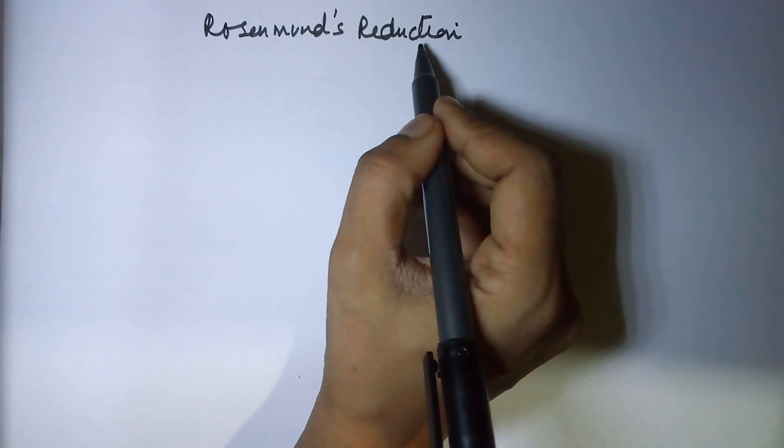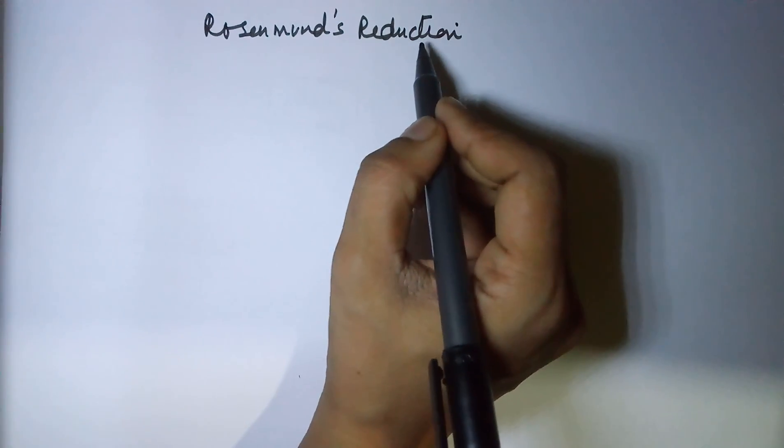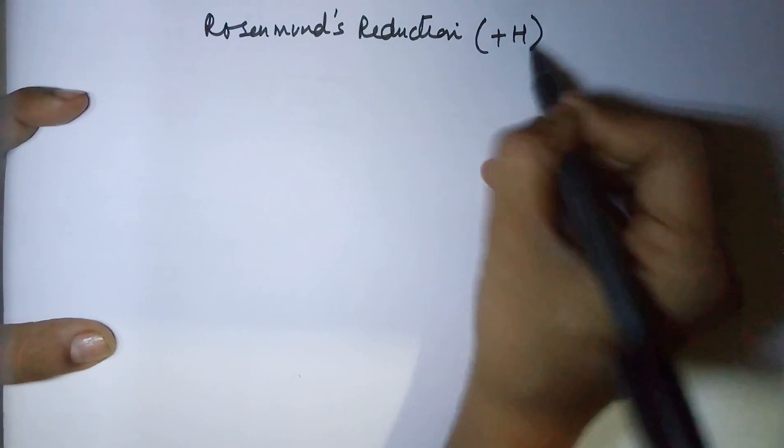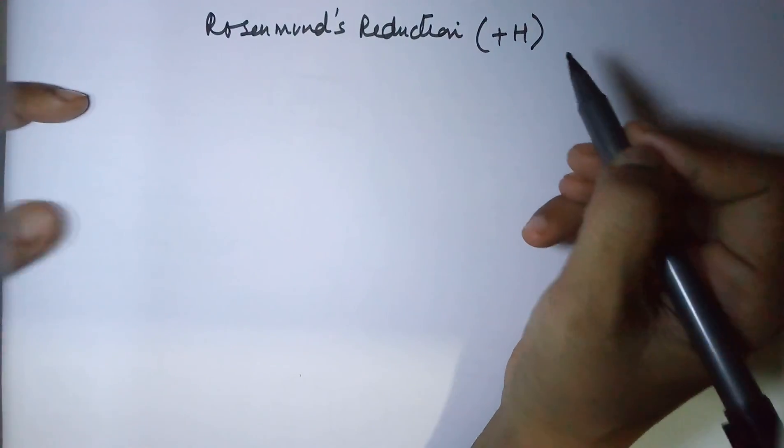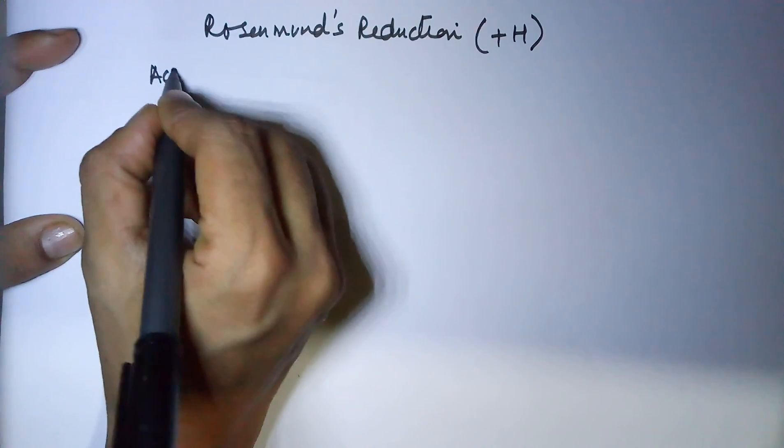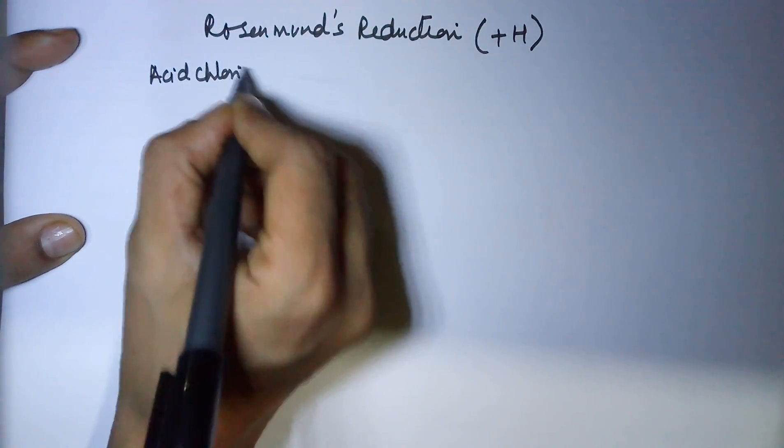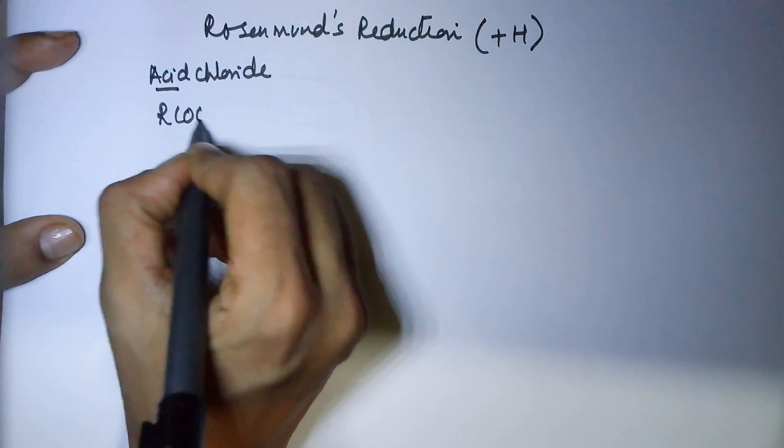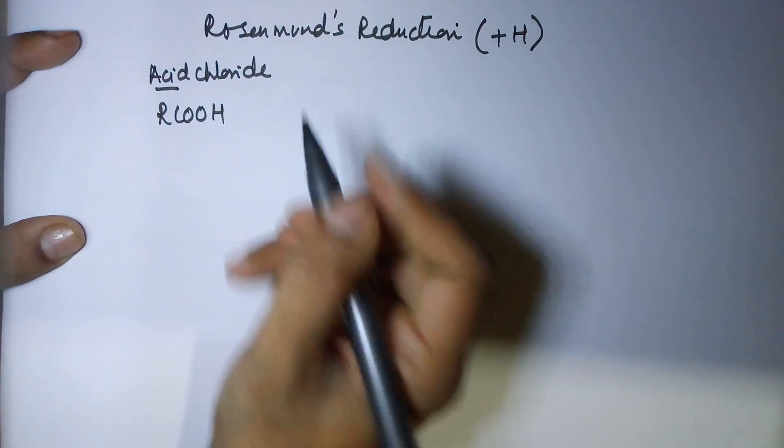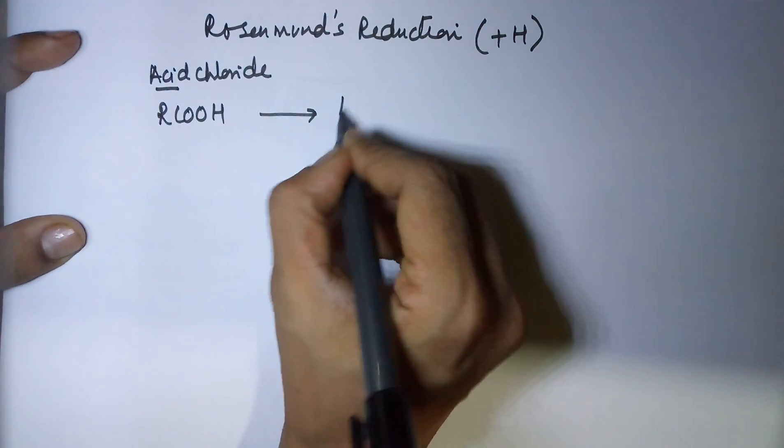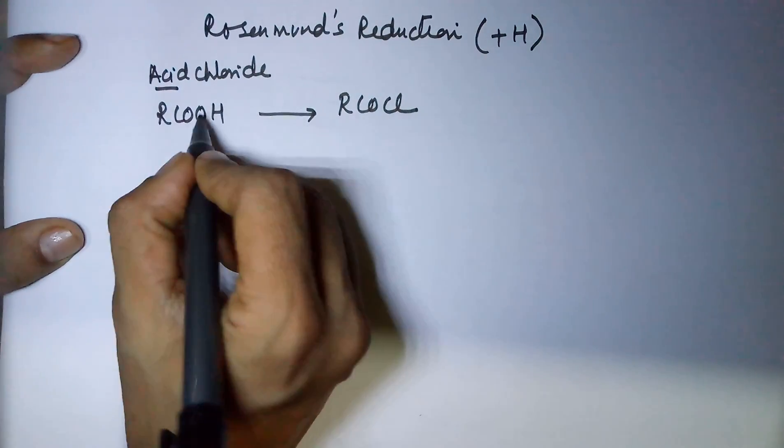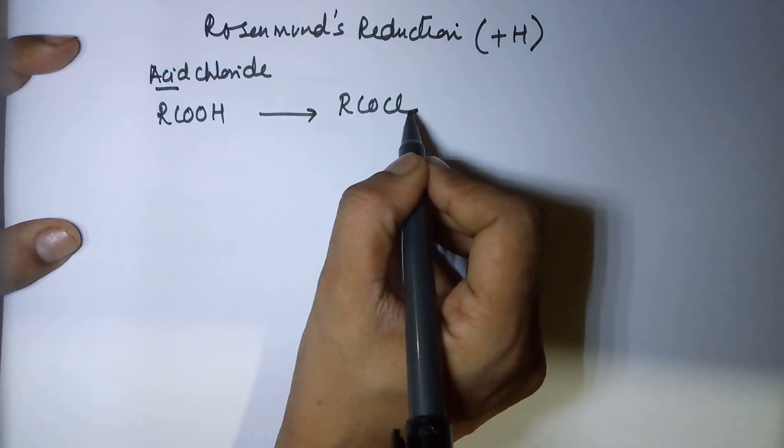So Rosenmund's reduction is a process where you have gain of hydrogen of an acid chloride. Now what is an acid chloride? Definitely it must be derived from an acid - a carboxylic acid. A carboxylic acid transforms into an acid chloride when the OH is transformed into a Cl.